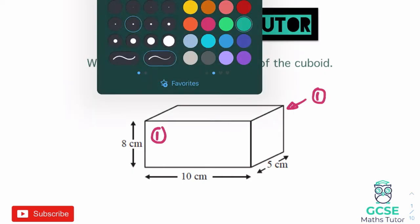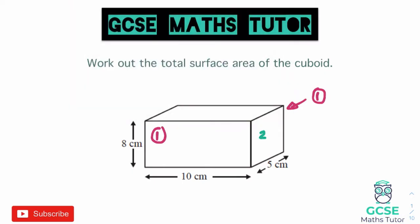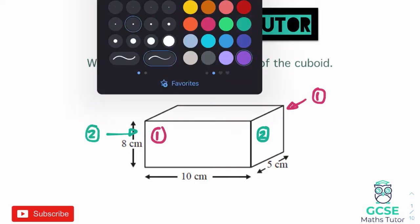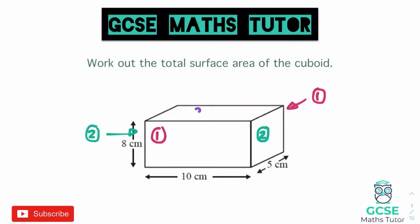We also have the shape on the right, which is another rectangle, and that is also on the left-hand side of the cuboid even though we can't see it. For the final face, we have the rectangle on top — face number three — which is the same as the face on the bottom. So a cuboid has two of each face, and since all faces are rectangles we just need to identify the side lengths for each one.